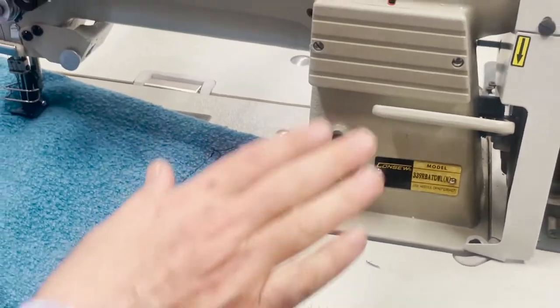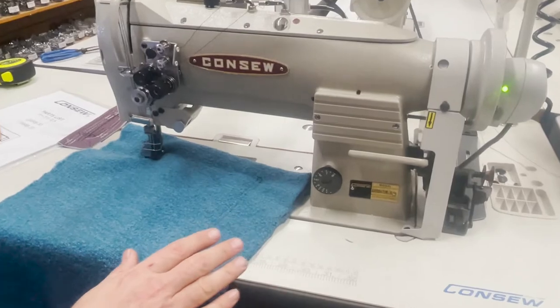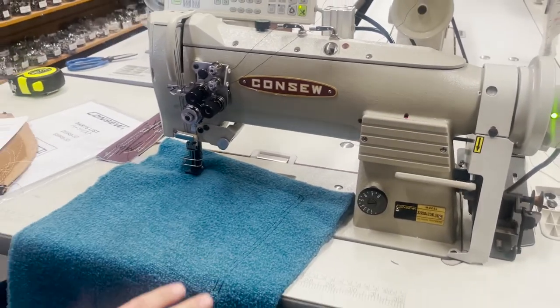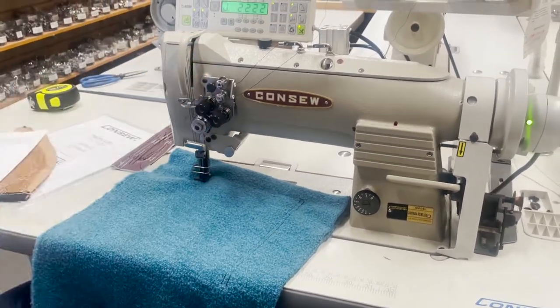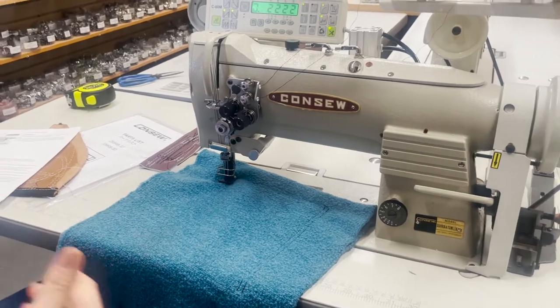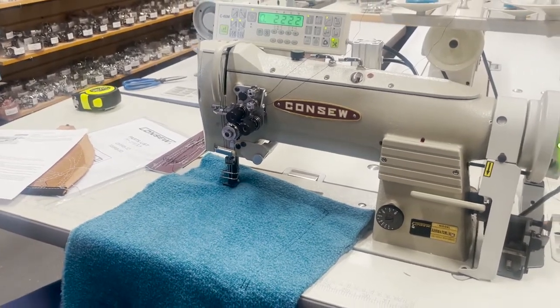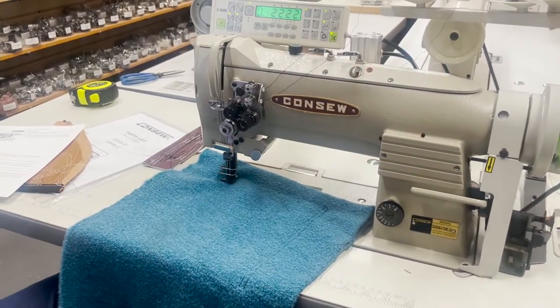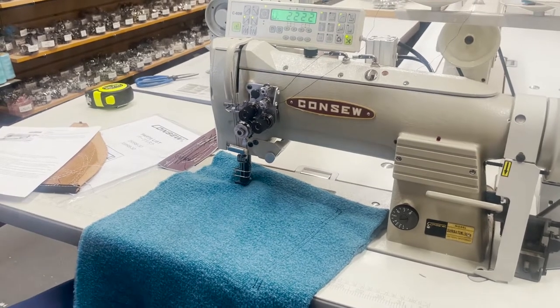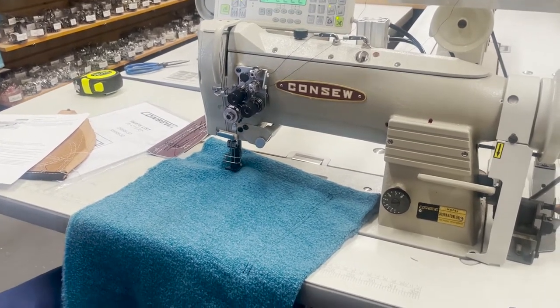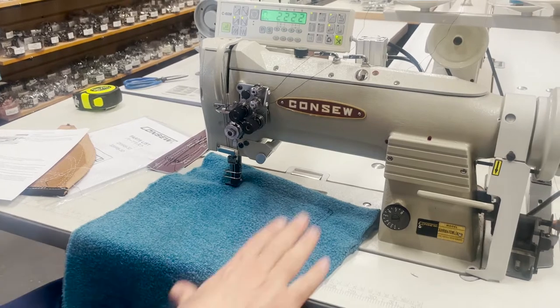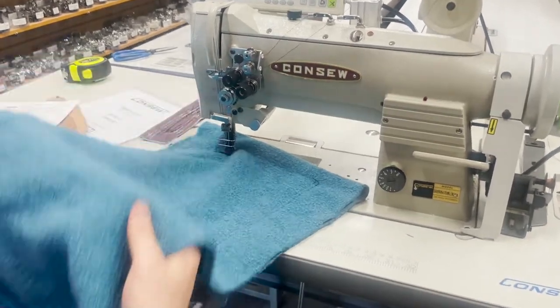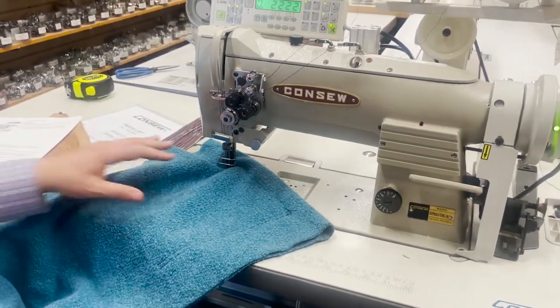But this one is a double needle walking foot machine with auto trim, auto cut, auto lift, reverse, you name it. They forgot to put an LED lamp here, so customers are going to complain that they can't see anything. We assembled the machine and we're shipping it out for a customer. Very special machine.